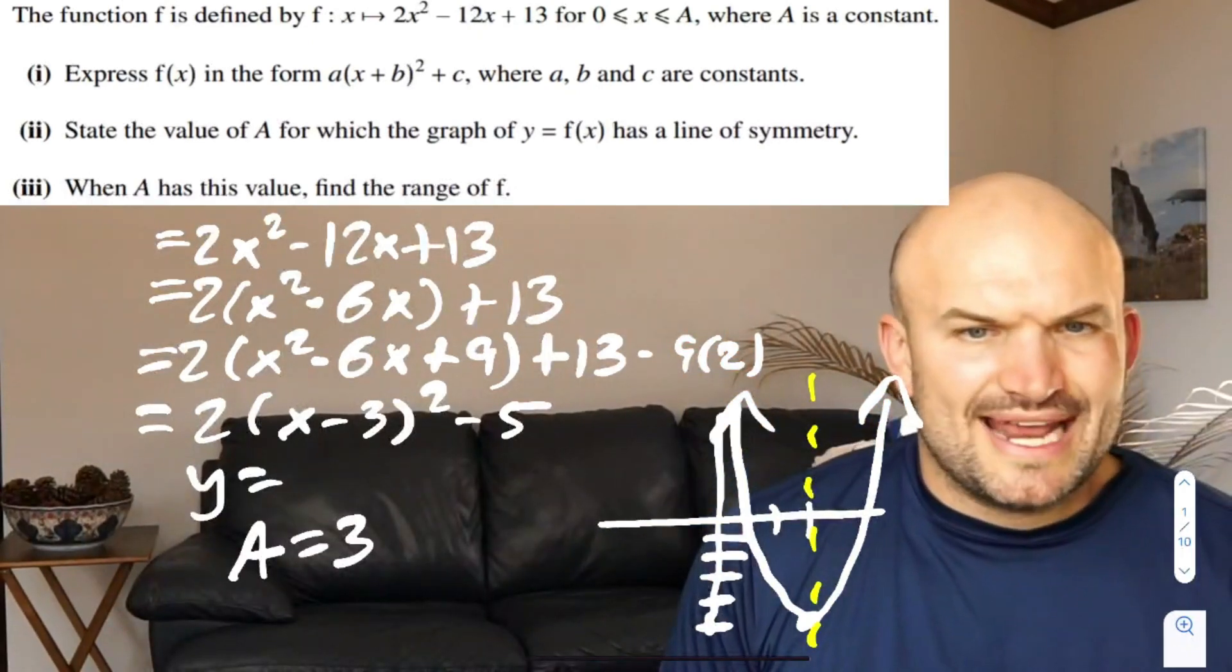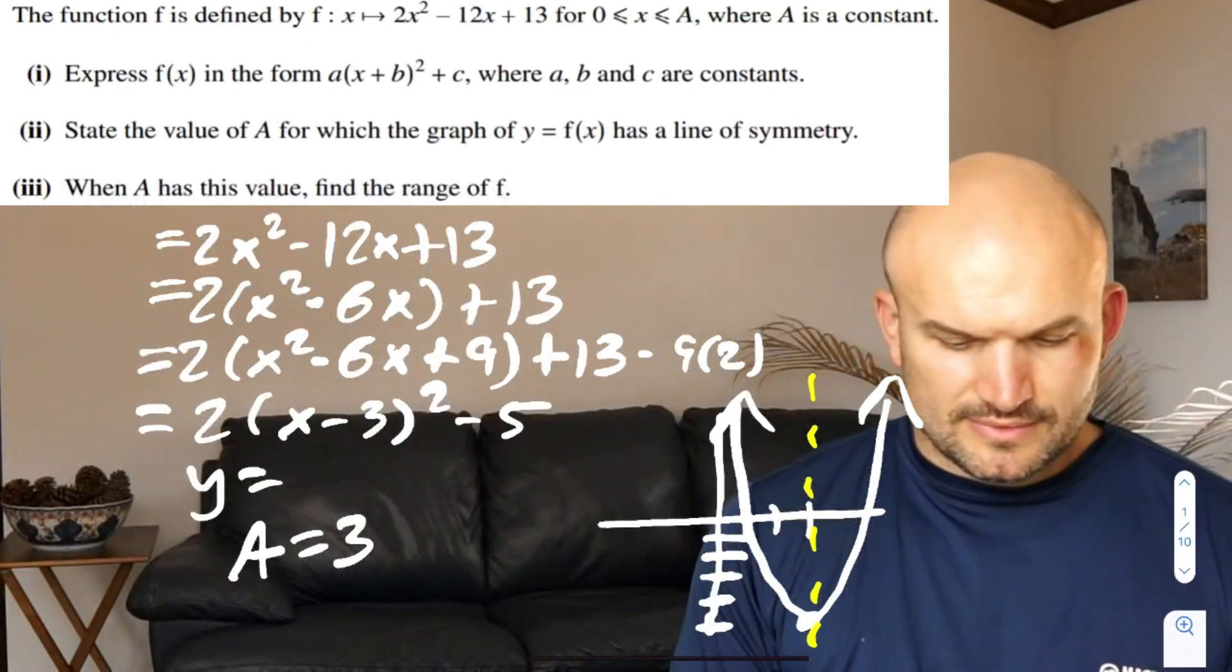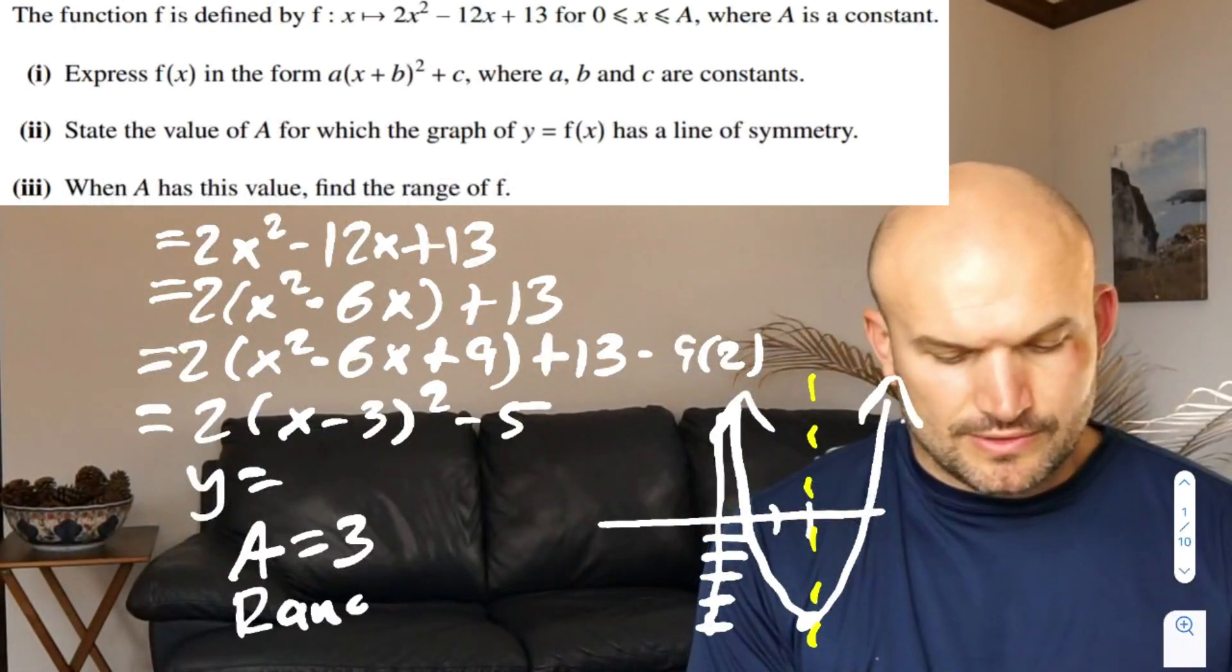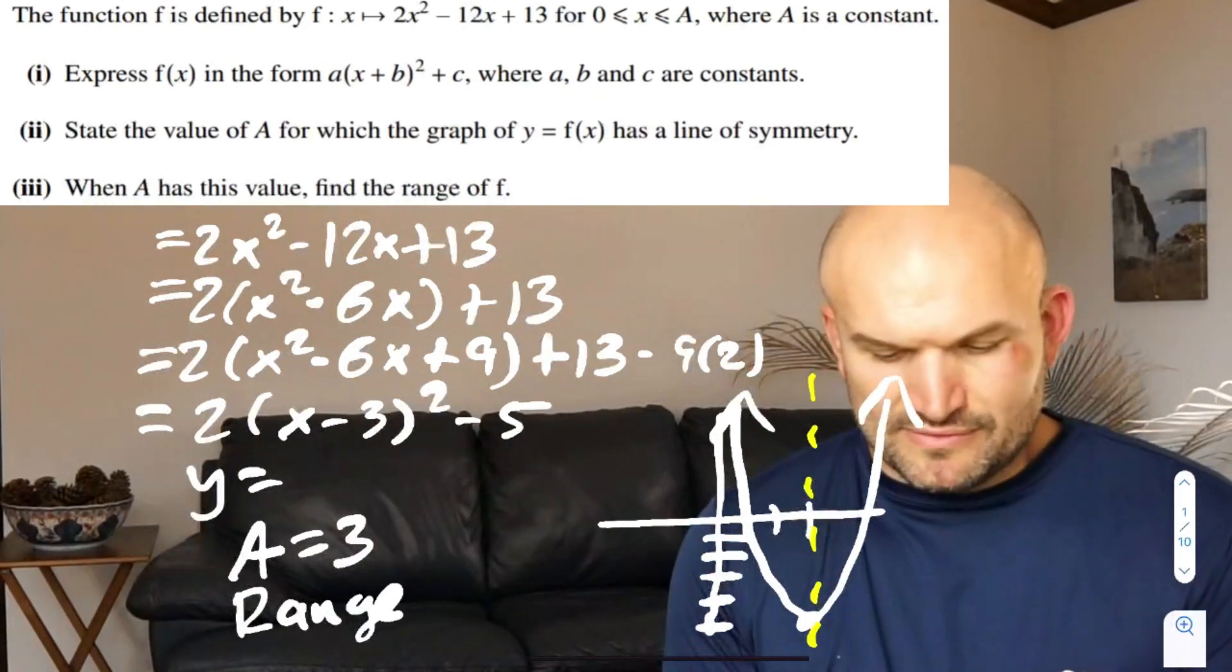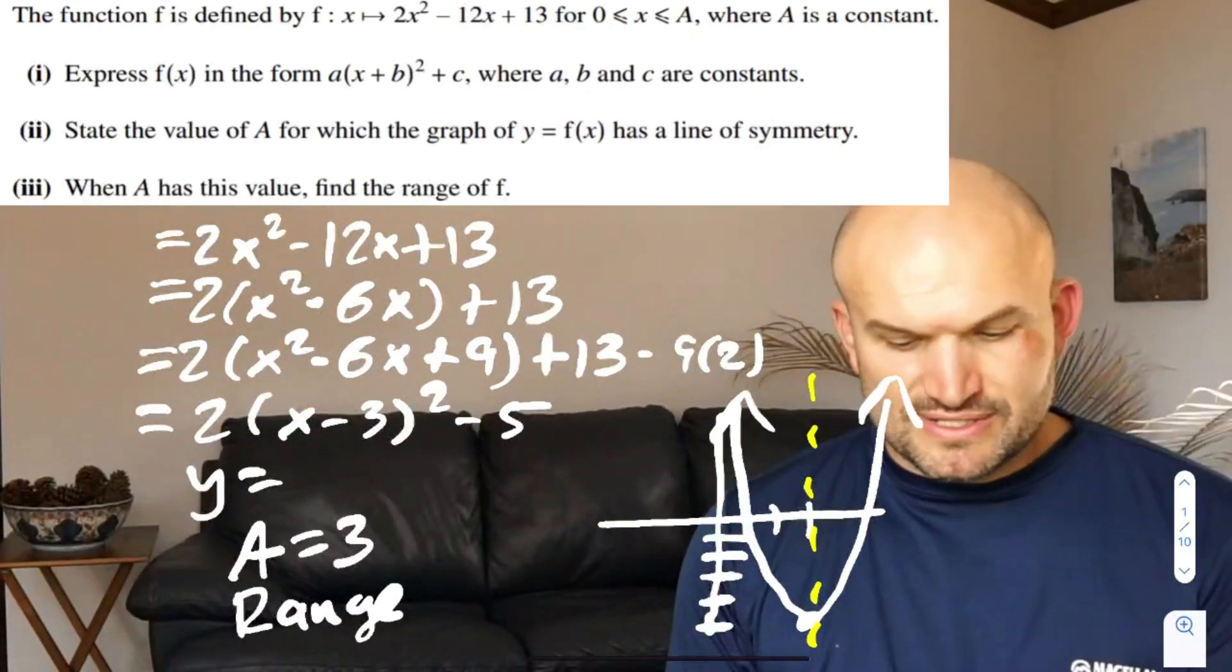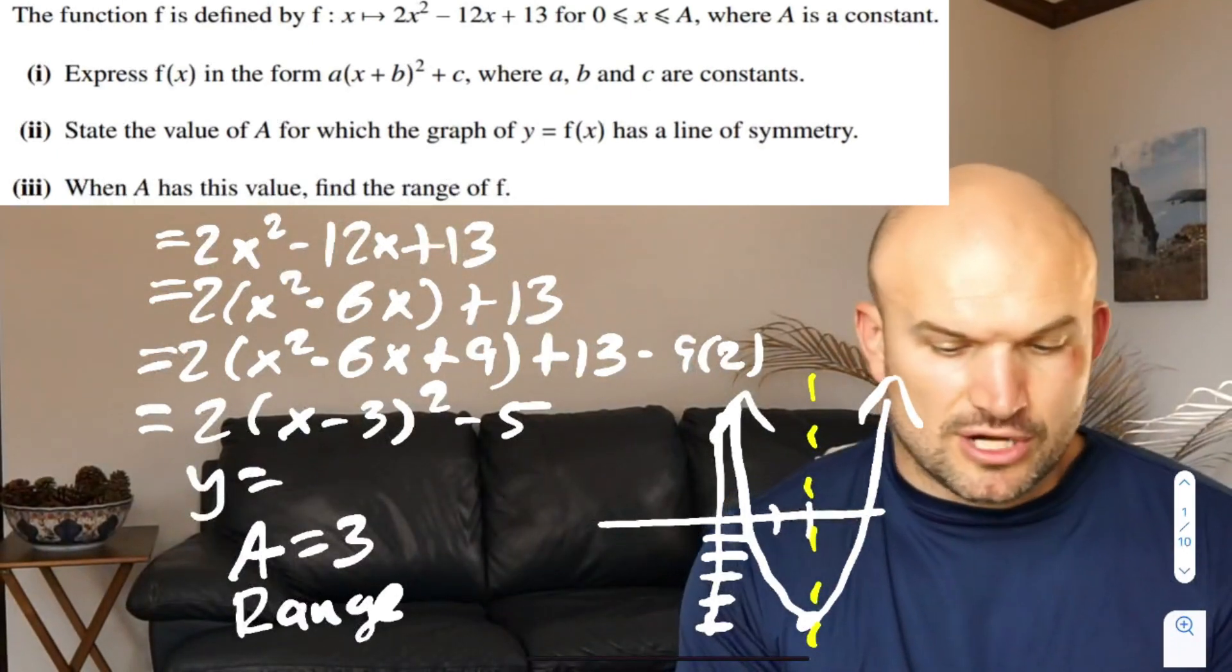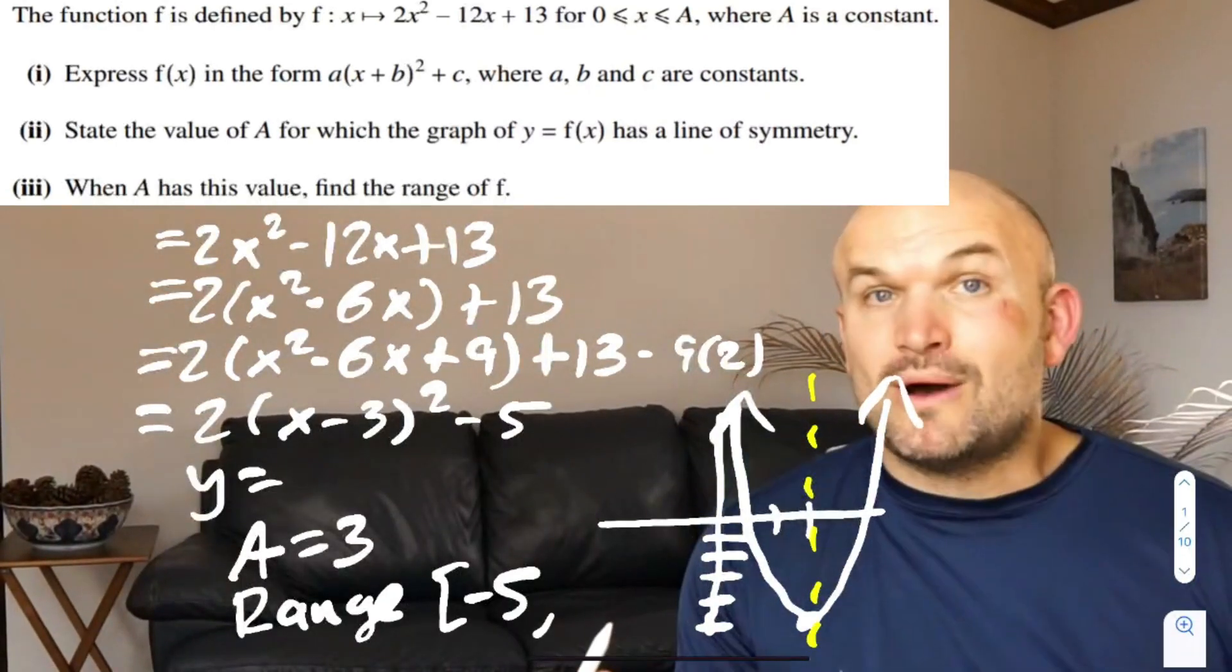The last part is when A has this value, find the range. If we're going from zero to three, you can see the graph goes all the way down five units. So we could say the range at three - if we only went from zero to three, what we want to do is at positive three we know the y value is at negative five. So our range here is going to be from negative five. Now what we need to do is figure out what the range is at zero, the y intercept, which I did in my brain.